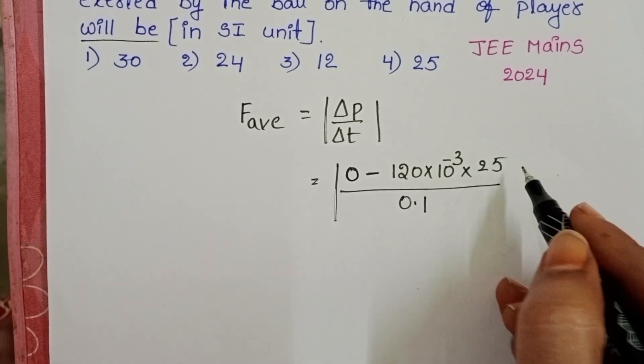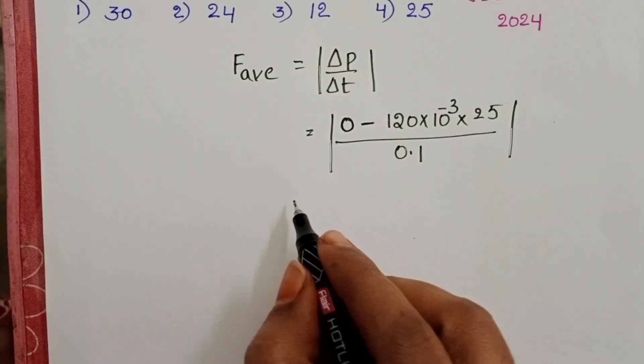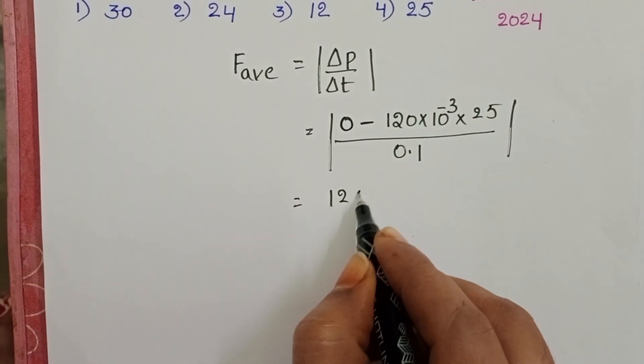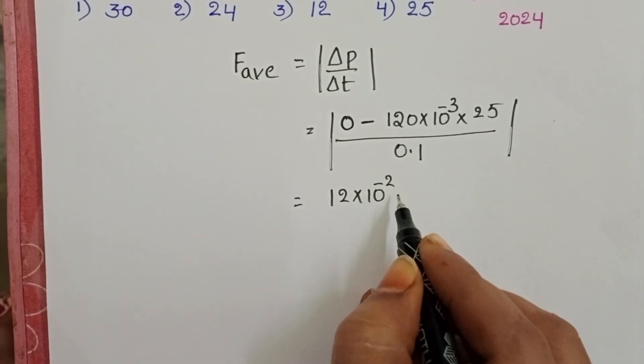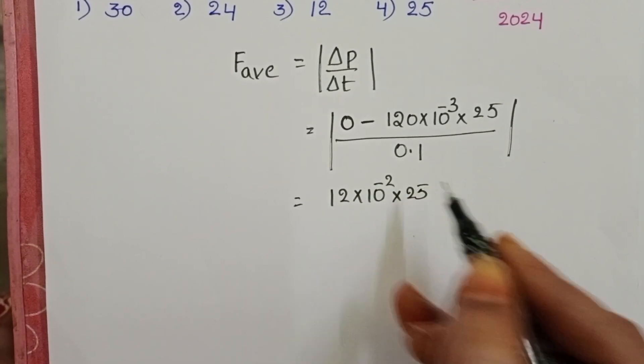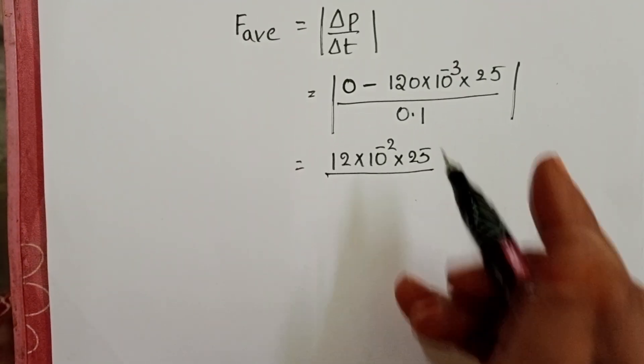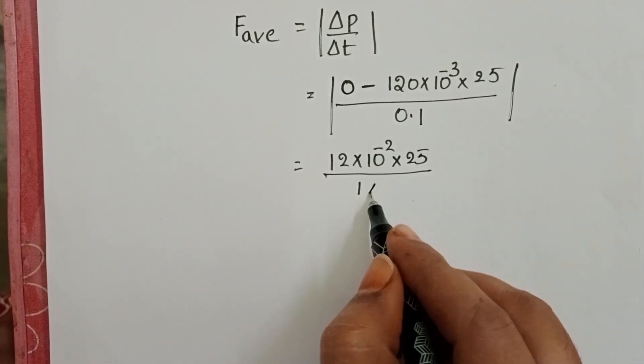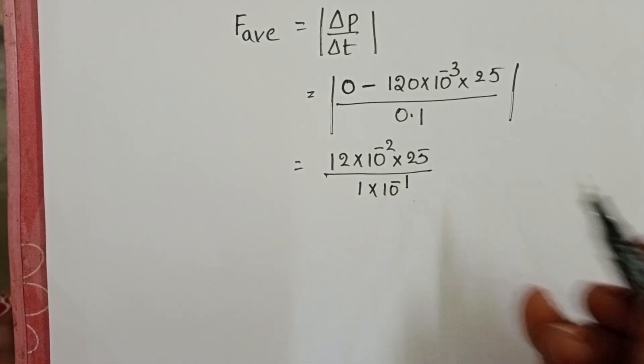So, in magnitude, minus becomes to plus. 12 into 10 power minus 2 into 25 by 0.1. Write 0.1, 1 into 10 power minus 1.